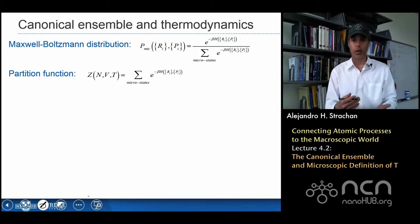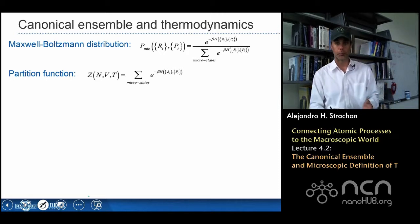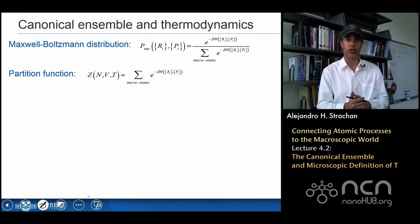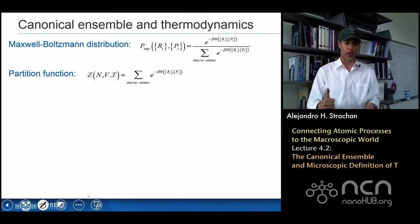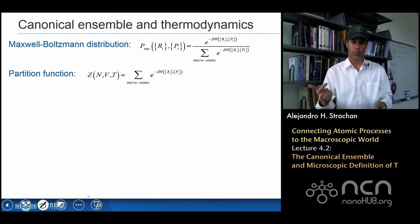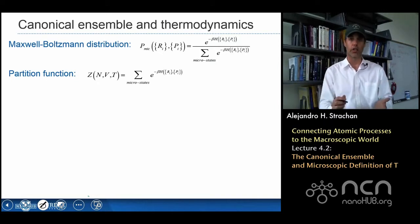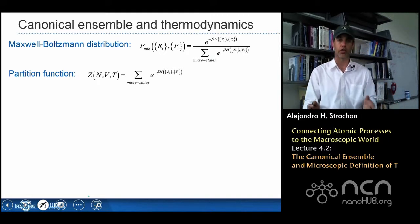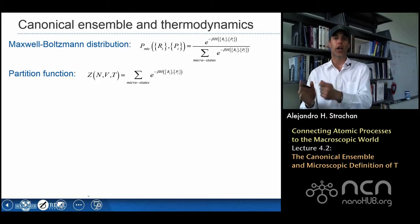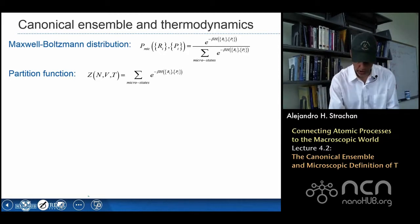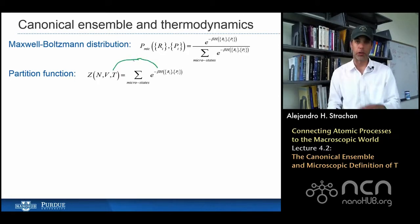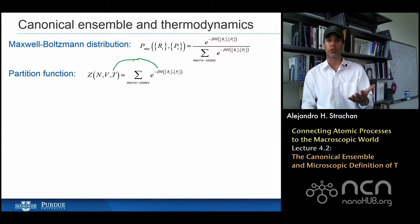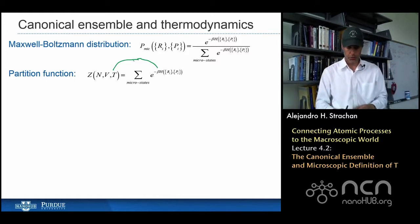The partition function Z is a function of the number of atoms, the volume, and temperature. It's the sum over all possible microscopic states of the Maxwell-Boltzmann weight — e to the negative beta times the energy of that specific state. The temperature comes from beta: if the temperature is different, the beta used will be different.